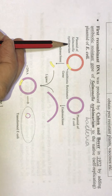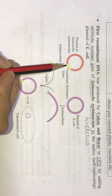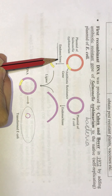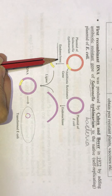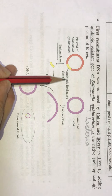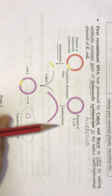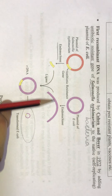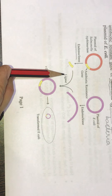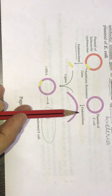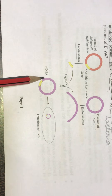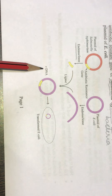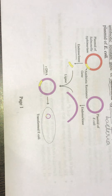Looking at the diagram: the plasmid of Salmonella typhimurium is shown, with the yellow color depicting the antibiotic resistant gene. Endonucleases make a cut and the yellow antibiotic resistant gene is isolated. Then the plasmid of E. coli is taken, it is cut, and with the help of ligase enzyme, the isolated gene is introduced into the E. coli plasmid. This DNA — the E. coli plasmid with the antibiotic resistant gene — is called recombinant DNA.